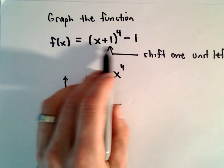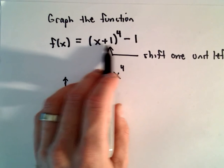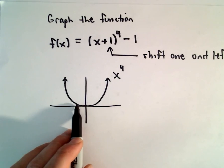When it's in the parentheses, I always remember it's sort of the opposite. It feels like you see a positive 1, which makes you think to the right, but it actually goes one unit to the left.